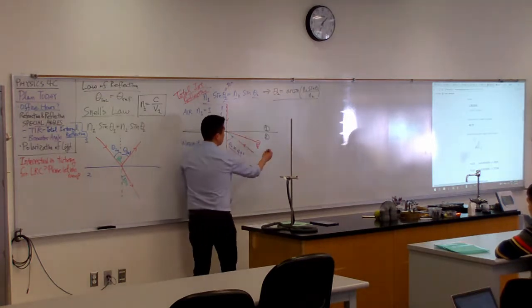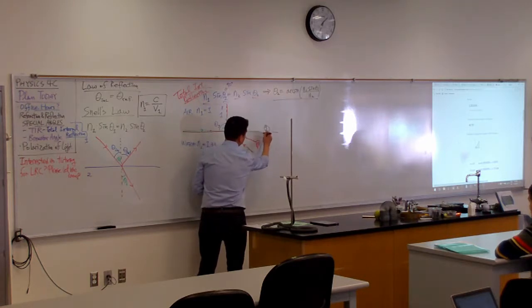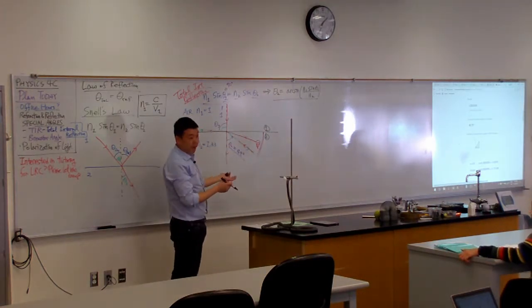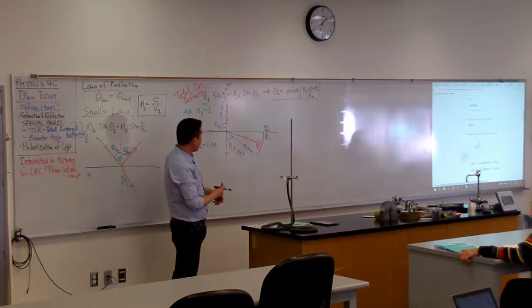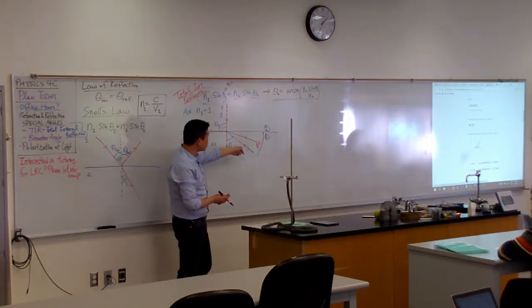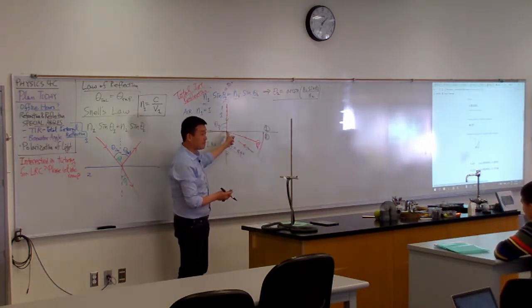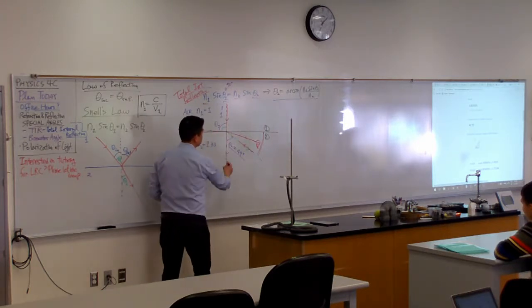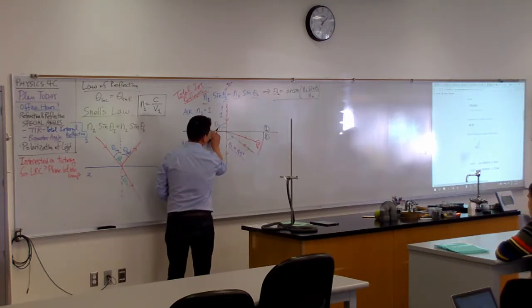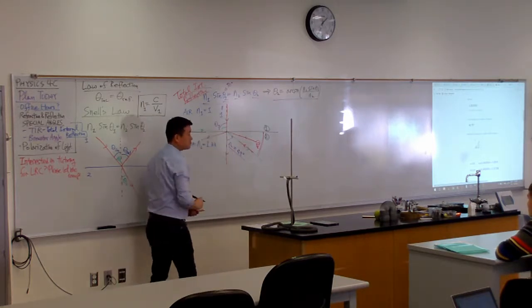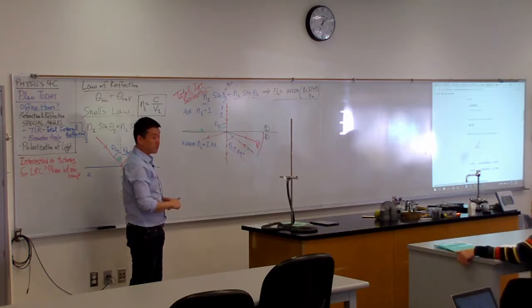So this is the condition where total internal reflection happens. If the light is coming from this range, there's no, it cannot refract. There's no way to get a ray on this side that's consistent with Snell's law. So what happens is there is still energy in this ray of light. It all has to go somewhere. And what it does is instead of refracting, refraction doesn't happen at all, it all reflects.